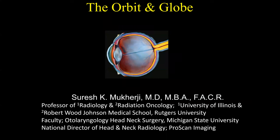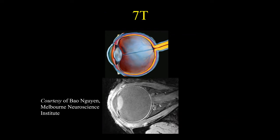This talk will be on the orbit and globe, and I have no relevant disclosures. When we look at the anatomy of the globe, it's really important to understand exactly what the various anatomic layers are. This is a nice example of sagittal images of the globe from a 7-Tesla MR that was given to me by my colleagues in Melbourne.